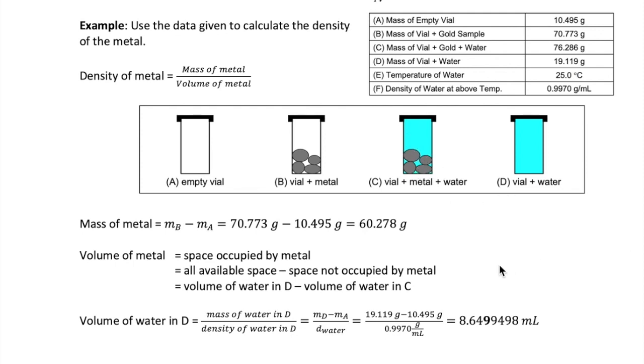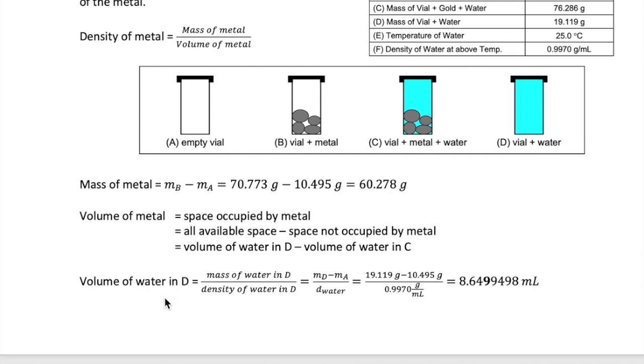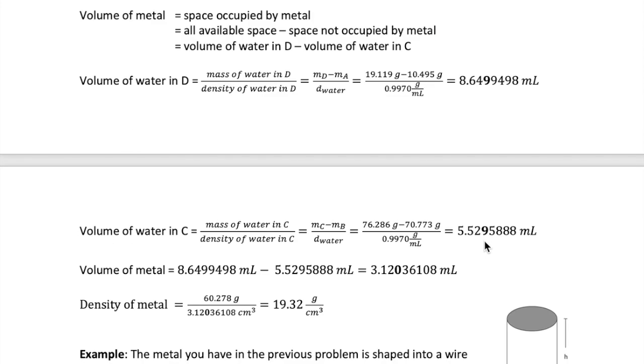Now let's figure out how to get these volumes. The volume of water in D can be calculated by dividing its mass and its density. How do we get the mass of water in D? We just subtract MD minus MA. Dividing that by density gives us this calculated value for volume. Now, I bolded the 9 here because that is where significant figure rules tells us we have to stop. But because we're still not done with our calculation, we're not going to round any of our numbers yet.